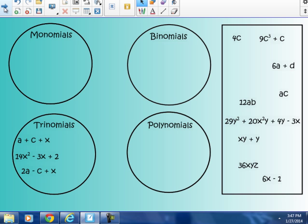I'm going to try the binomial circle. C³ is unlike c because they have different powers. 9c³ + c is an example of a binomial. 6a + d, like six apples and a donut. Apples and a donut don't combine together, although you can have an apple donut, but apples and donuts are two unlike things.